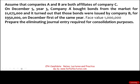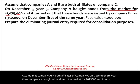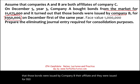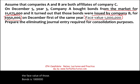Assume that companies A and B are both affiliates of company C. On December 5th, year 3, company A bought a bond from the market for $1,075,000. It turns out those bonds were issued by company B, their affiliate, and were issued for $950,000 on December 1st of the same year. The face value of those bonds is $1,000,000. Prepare the eliminating journal entries required for consolidation.